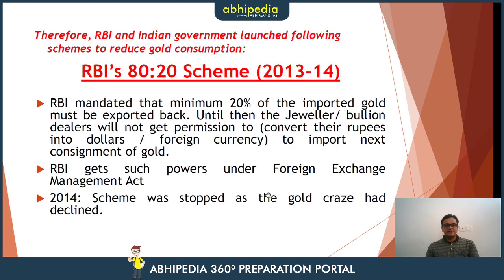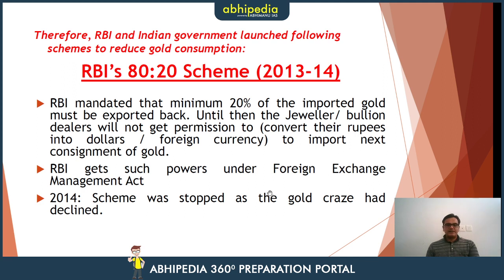Now let's look at the slide on what we have to know about the RBI's efforts to reduce gold imports and their negative impacts. The first scheme is the 80-20 scheme of 2013-2014, the most important thing being that a minimum 20% of imported gold must be exported back as a finished product.